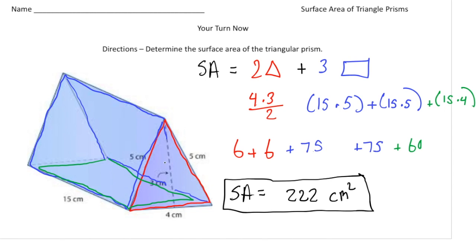I tried to color-coordinate this. The bases are triangles, and the area of one triangle is six. Because we have two of them, six plus six gives us 12 — the area of the bases. Now for the sides: the area of one side is 15 times five, which is 75. The right-hand side is the same as the left-hand side, so that's 75 plus 75. And then the bottom has an area of 15 times four, which is 60. Adding six plus six plus 75 plus 75 plus 60, you get a total surface area of 222 square centimeters.